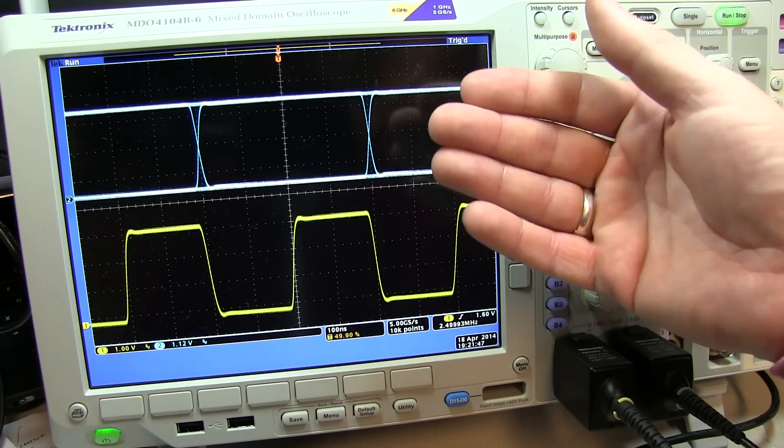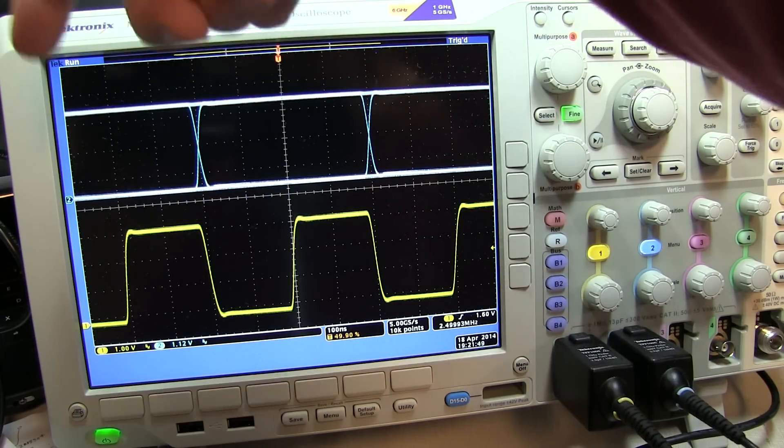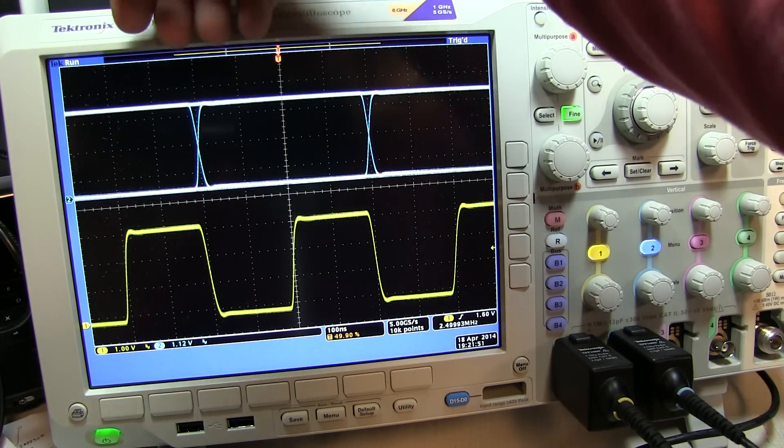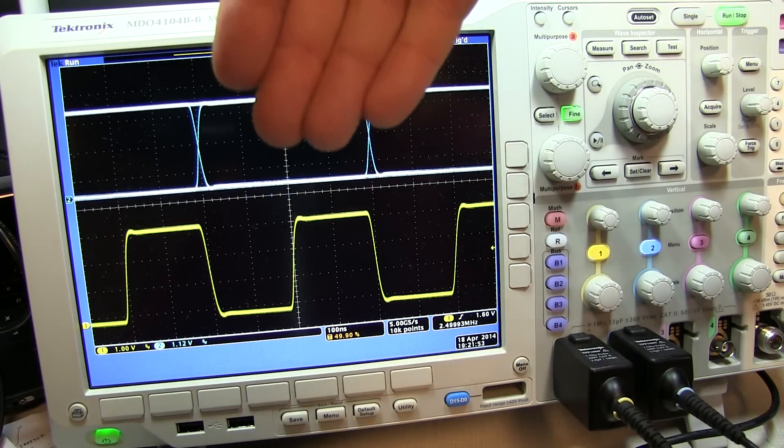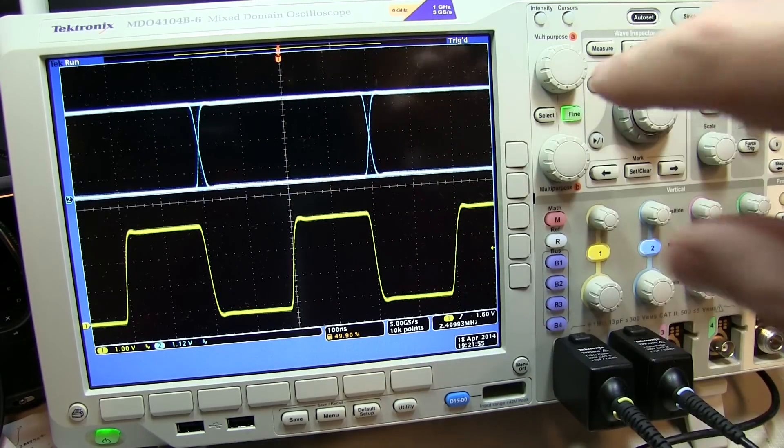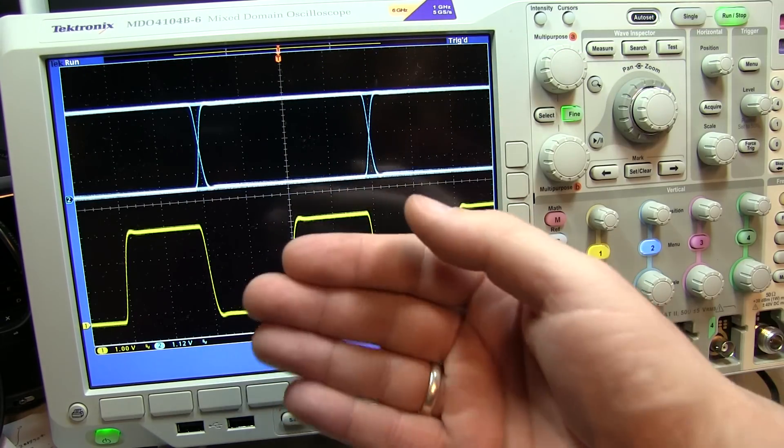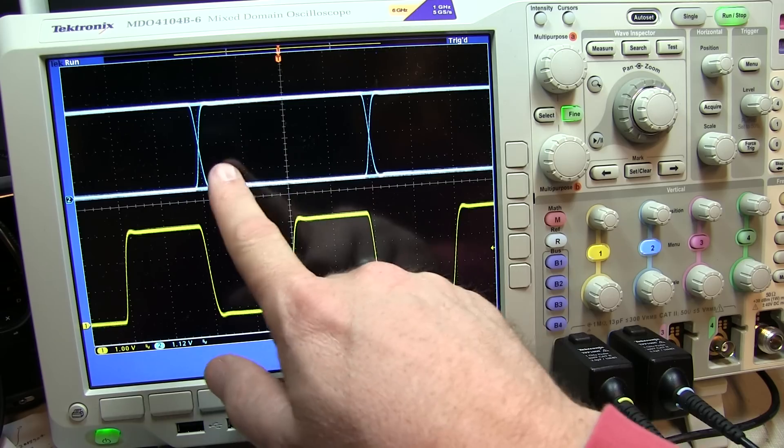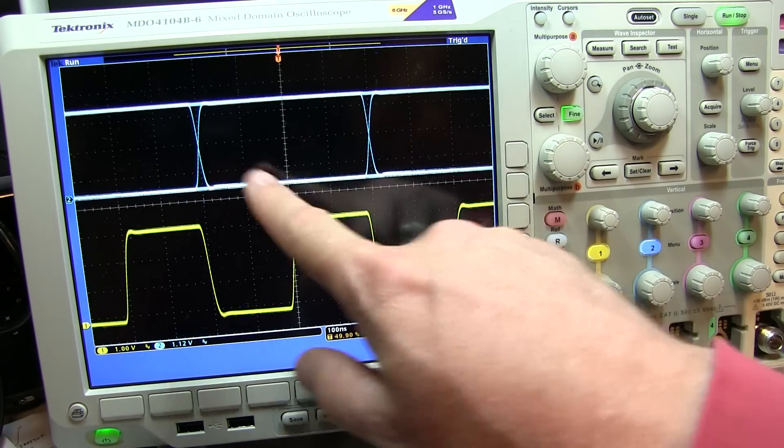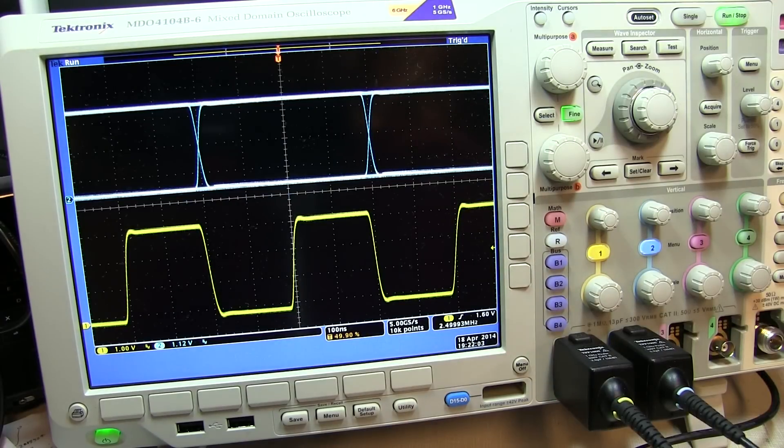But each of these particular standards and types, if you're going to be servicing it or something like that, will often have a picture of what the eye pattern ought to look like. And in all of those cases, the eye pattern is essentially built up by taking multiple data transitions and bit times and laying them all on top of each other, displaying them all. So you can kind of look through that pattern and look at overall timing and timing accuracy and amplitude accuracy for that signal.